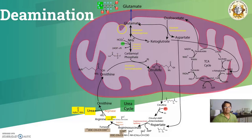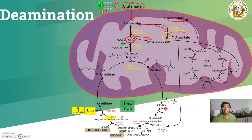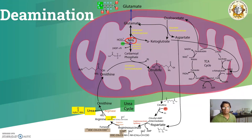Deamination is the removal of the amino group. The glutamate obtained enters the liver and then the mitochondria, where it dissociates into alpha-keto glutarate and the amino group is removed. Aspartate aminotransferase combines with oxaloacetate and transfers its amino group to form aspartate, and keto-glutarate forms again. The removed amino group, in combination with a carboxyl group and in the presence of 2 ATP, forms carbamyl phosphate in the presence of carbamyl phosphate synthase.